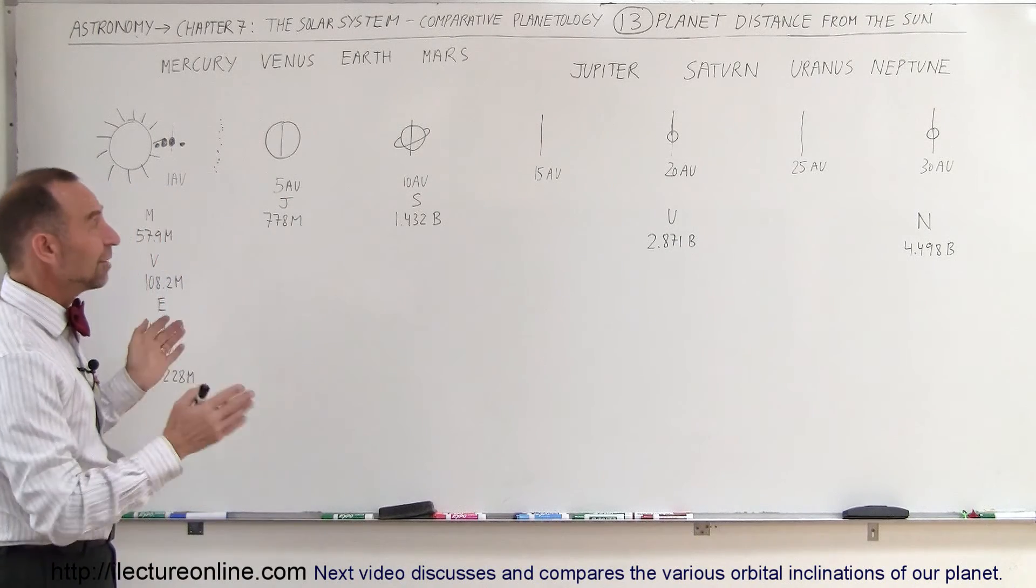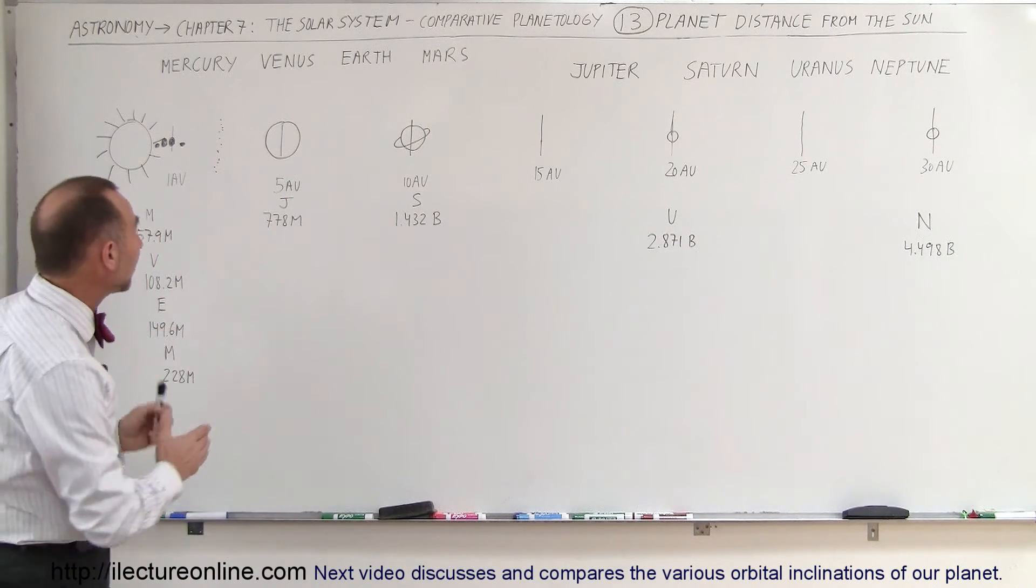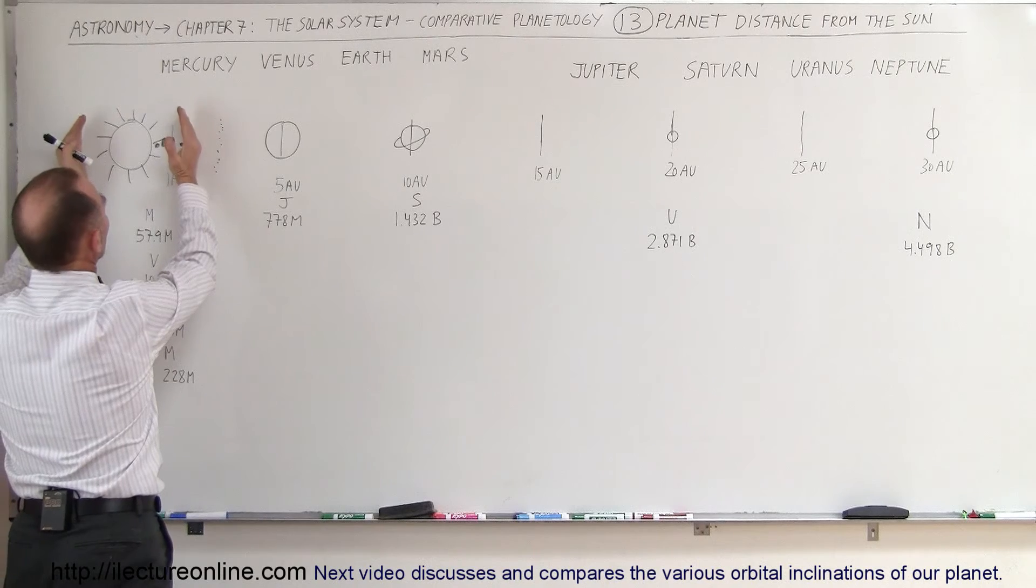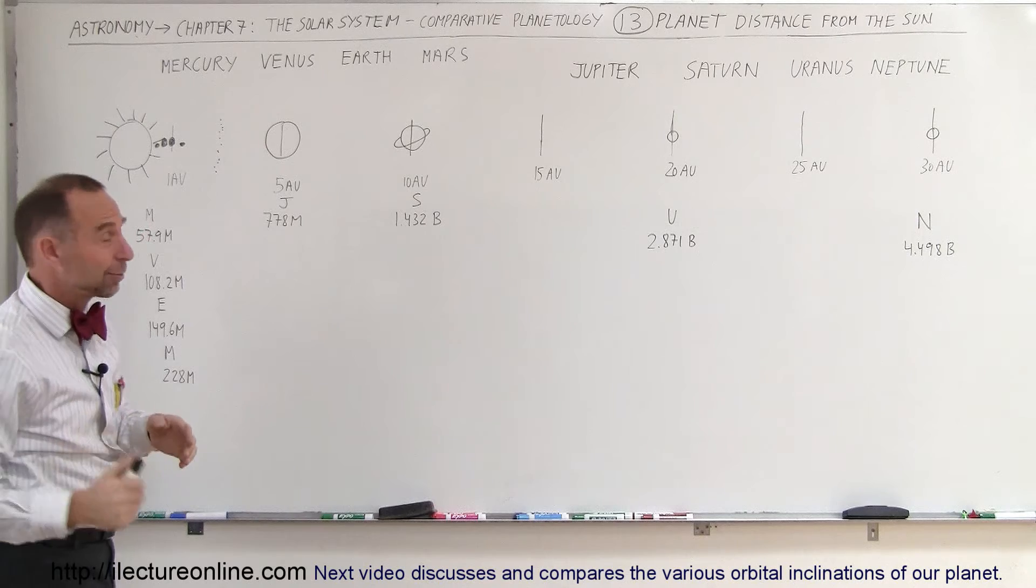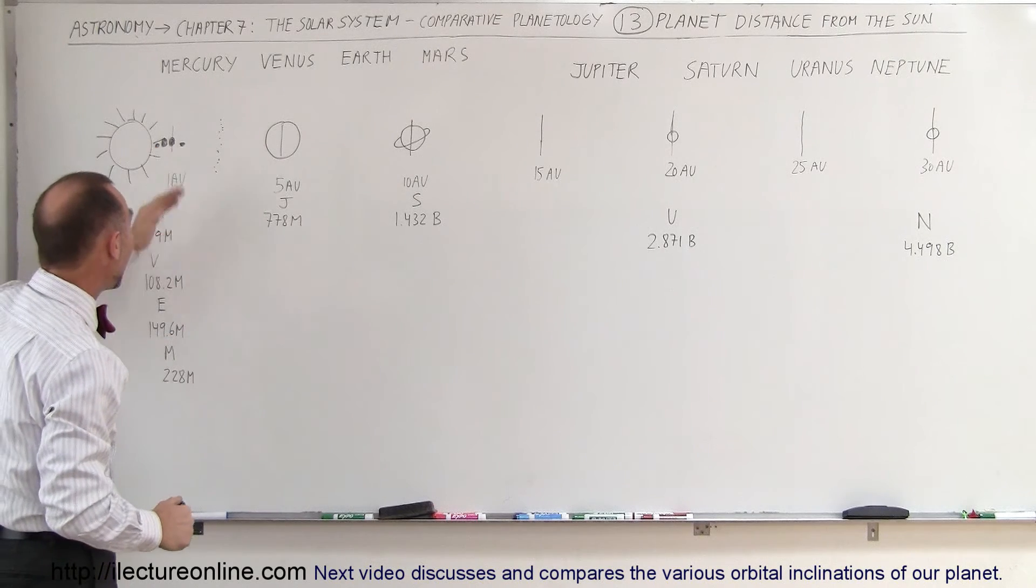So the solar system, even though there's eight planets, there's really two regions. We have the inner solar system right here, where we have the terrestrial planets, and the temperatures are relatively mild. As a matter of fact, you get a little bit too close to the Sun, like Mercury and Venus, that actually is outright hot in those regions.